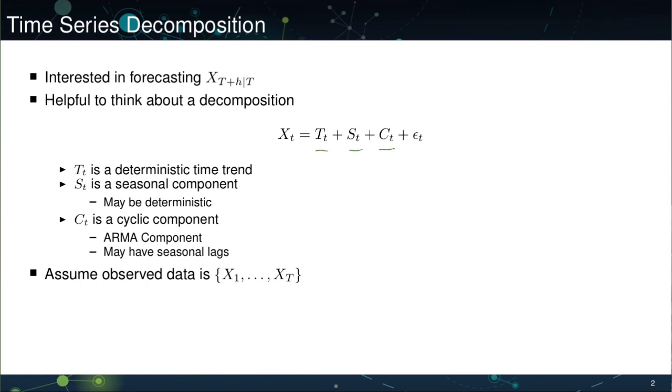Throughout we assume that we observe t data points x1 through xt. Our interest, and the interest of the entire course, is going to be on forecasting xt plus h given t, that is the h step-ahead forecast given the information available at time t. We'll often be making forecasts for multiple horizons, for example, t plus 1, t plus 5, t plus 10, t plus 12 for monthly data, and so on.